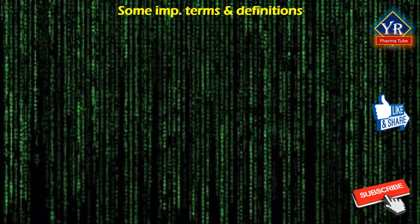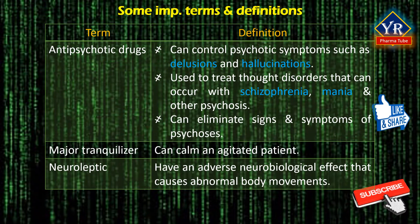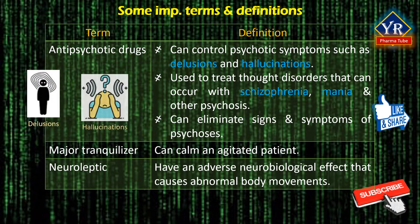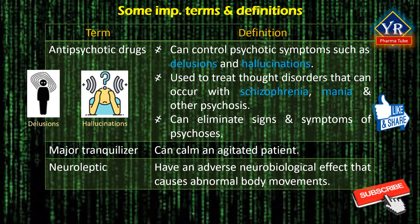Some important terms that generally come across in this topic and their definitions have been discussed here. Antipsychotic drugs can control psychotic symptoms such as delusions and hallucinations. Delusions are false beliefs that cannot be changed with reason. Hallucinations are false perceptions that have no basis in reality. Antipsychotics are also used to treat thought disorders that can occur with schizophrenia, mania, and other psychosis. They are thus sometimes called antimaniac drugs.